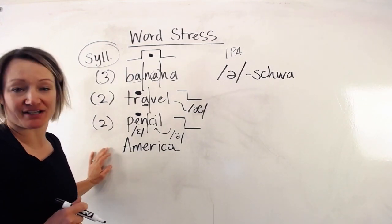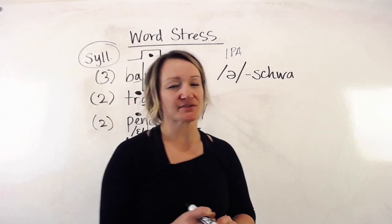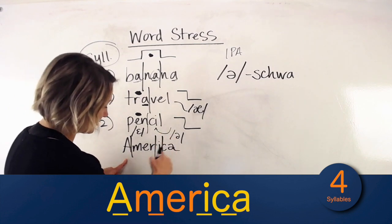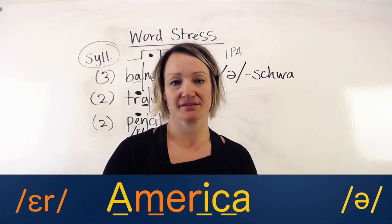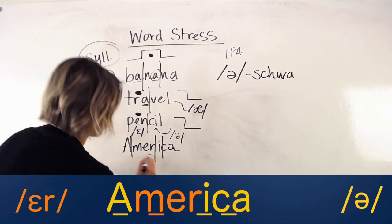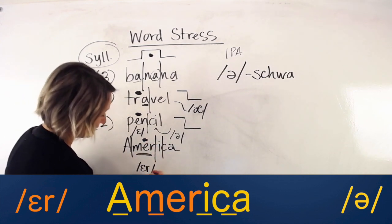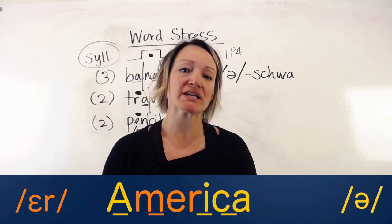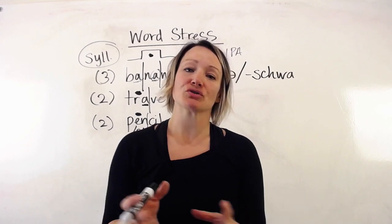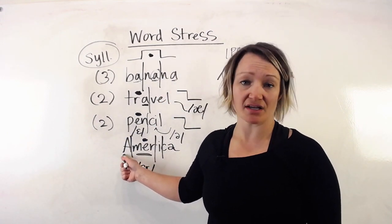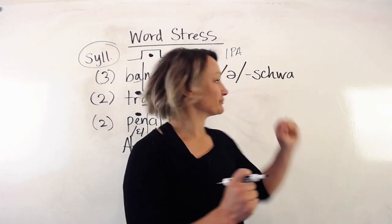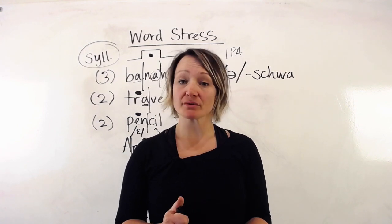Next word: 'America.' How many syllables? Four. Where's the stress? Not 'AMerica,' but 'aMERica' — the second syllable is stressed, so 'er' is the clear vowel here. The other sounds become the schwa: the beginning vowel is 'uh,' and at the end too — 'uh-MER-i-cuh.' Those unstressed sounds become small and turn into the schwa.